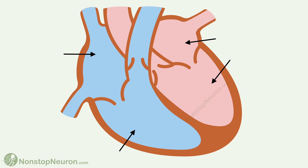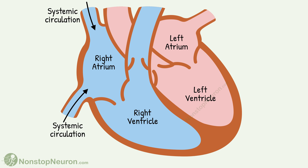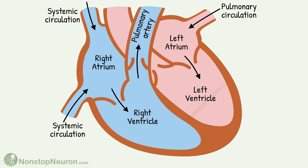The heart is made up of four chambers — two atria and two ventricles. The right atrium receives blood from the systemic circulation and the left atrium receives blood from the pulmonary circulation. From the atria, the blood goes to the ventricles. The right ventricle pumps blood into the pulmonary artery and the left ventricle pumps blood into the aorta.